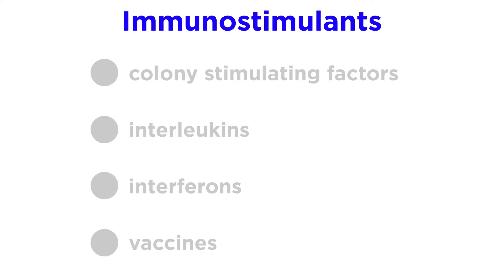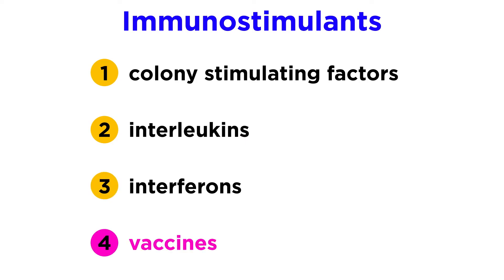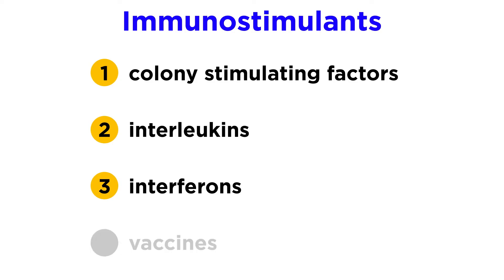There are four main classes of immunostimulatory drugs: colony stimulating factors, interleukins, interferons, and vaccines. In this tutorial, we won't discuss vaccines, as these have been discussed in more than one context in tutorials on immunology, the history of drugs, as well as debunking content, so let's focus on the other three.